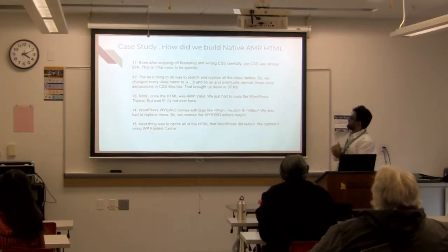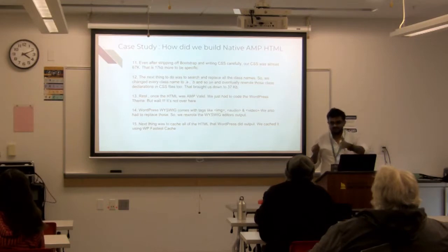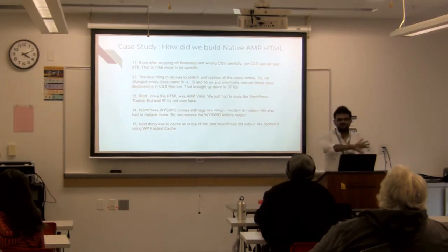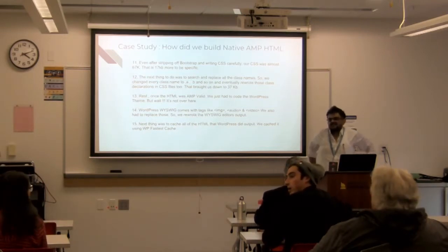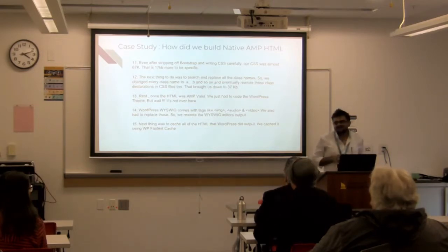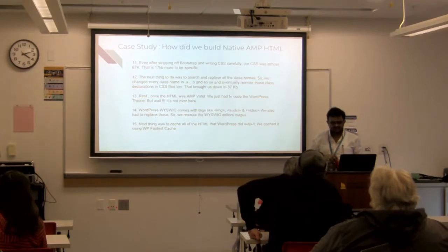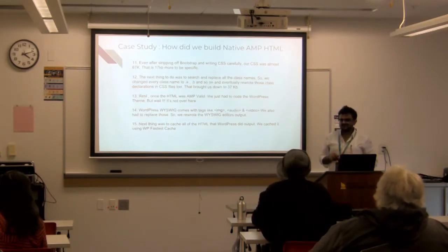Even after stripping the CSS and writing it carefully, we were at almost 67KB — 17KB more than Google's 50KB limit. The next thing we did was replace the class names. We had big class names like 'header,' 'top-header,' 'bottom-header' — we replaced them with .a, .b, .c, .d and brought it down to 37KB. We didn't do this manually — we wrote a PHP program to do it for us, like a compiler to minify the code. My team would have left the job if I'd asked them to rewrite all the class names manually.